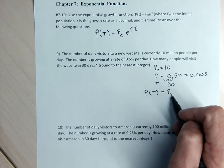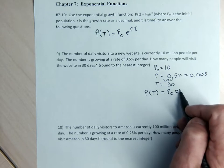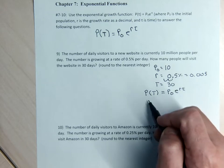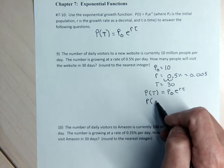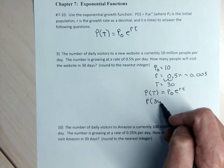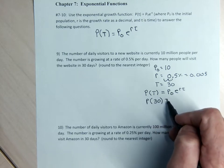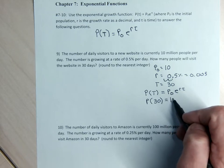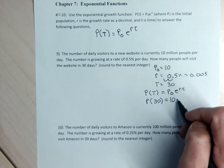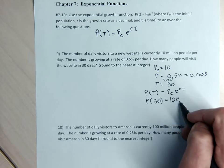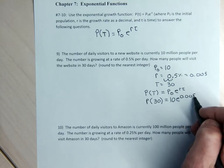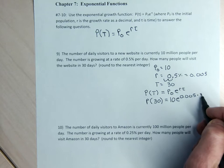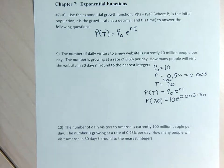P of 30 — the number of people that will go to the website in 30 days — is the initial number 10 (which stands for 10 million) times E to the R, which is 0.005, times T, which is 30. You'd enter that in your calculator and we'll round to the nearest integer. I'll go ahead and do number 10 to show you how the rounding is going to work.